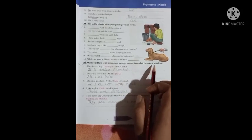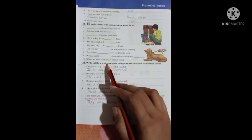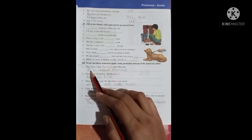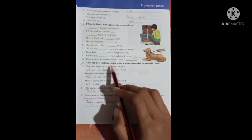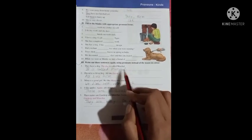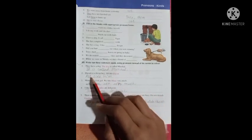We have to change these color words into pronouns, okay? They have a dog. The dog is called Marshall. It is called Marshall. David is a clever boy. All like David. All liked him.